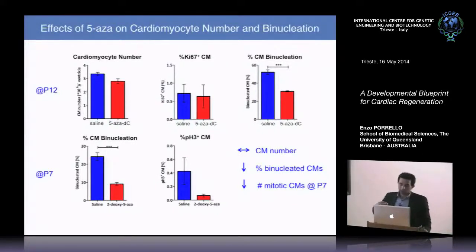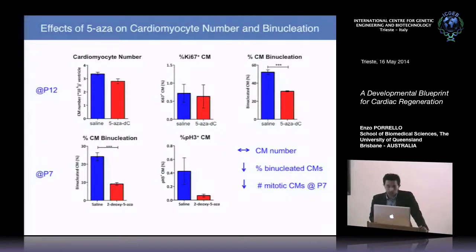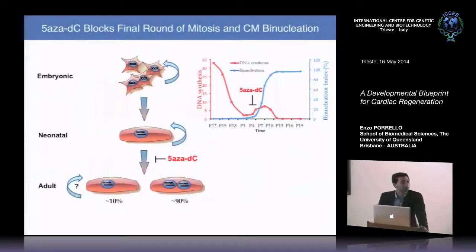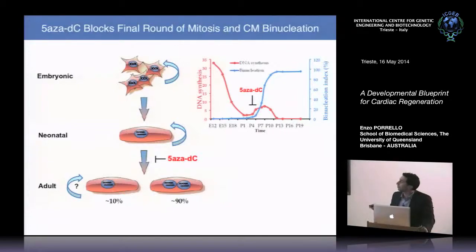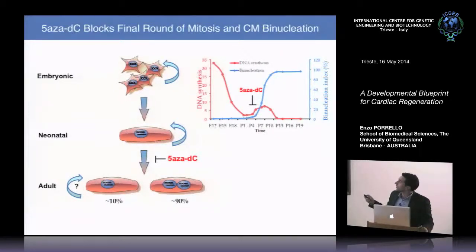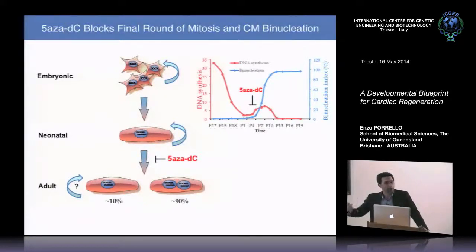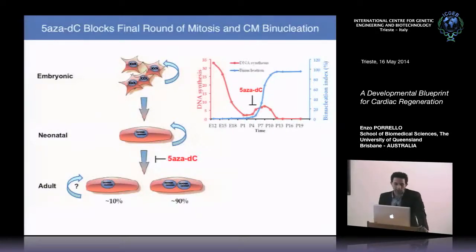Blocking DNA methylation during the postnatal period is associated with increased heart size, increased cardiomyocyte size without change in number, and a marked reduction in binucleated cardiomyocytes. We think this is due to fewer cardiomyocytes entering mitosis during the final round of DNA replication — 5-AZA prevents this transition into the final round of mitosis required for cardiomyocyte binucleation in the immediate postnatal period.